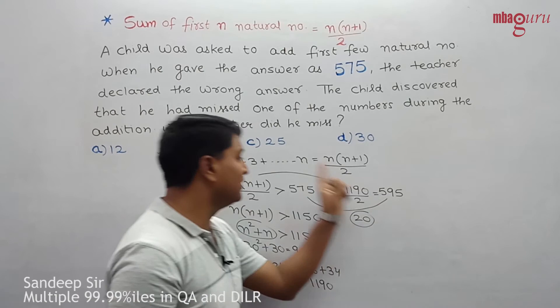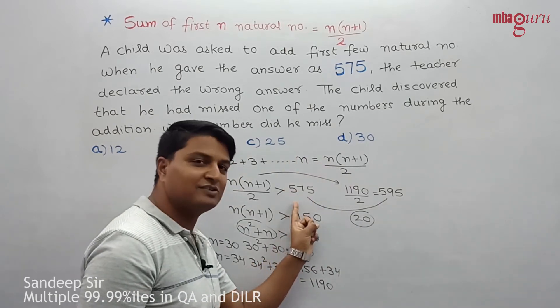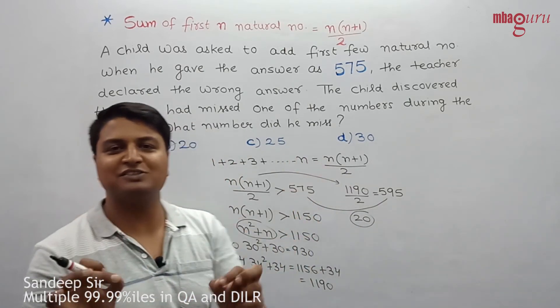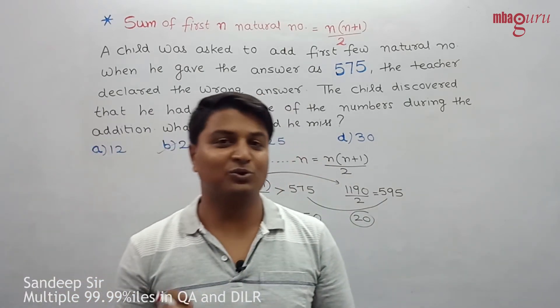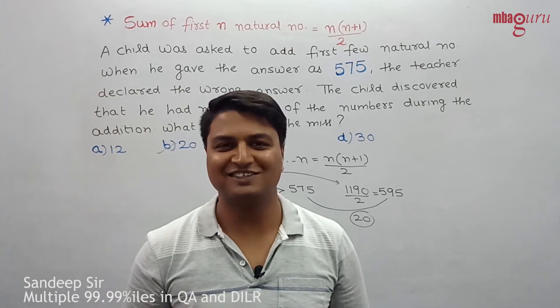So 595 minus 575 gives us 20. The missing number is 20. That is the solution to this question.